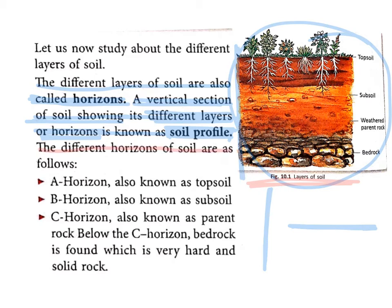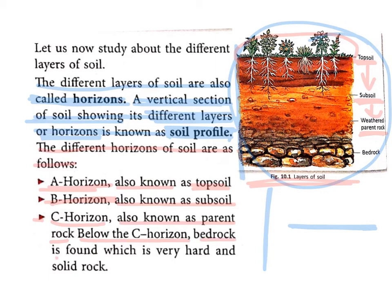The different horizons of soil are as follows. The first is the A horizon, also known as topsoil — all vegetation is found on topsoil. The second is the B horizon, also known as subsoil — it is just below the topsoil. The third is the C horizon, also known as parent rock — it is just below the subsoil. Below the C horizon, bedrock is found, which is very hard and solid rock.